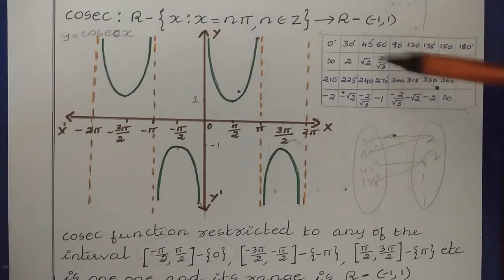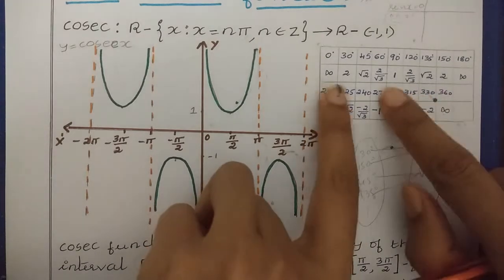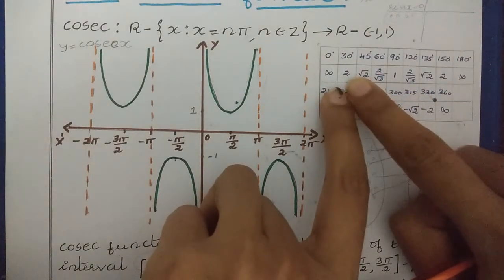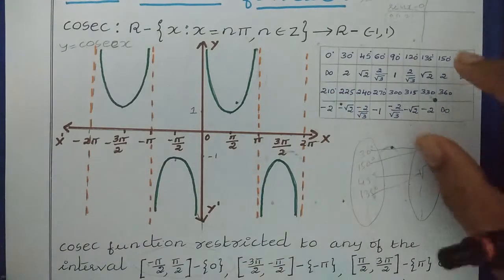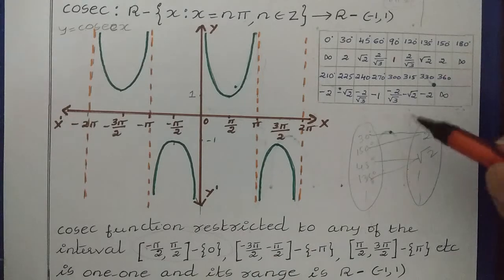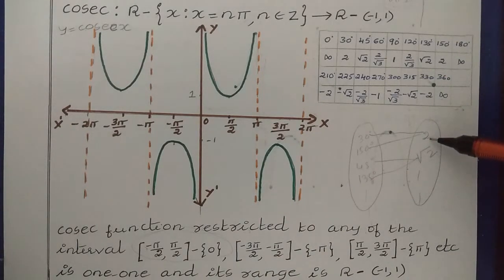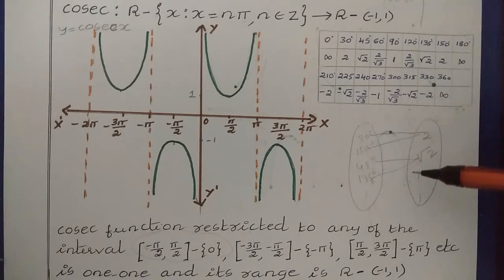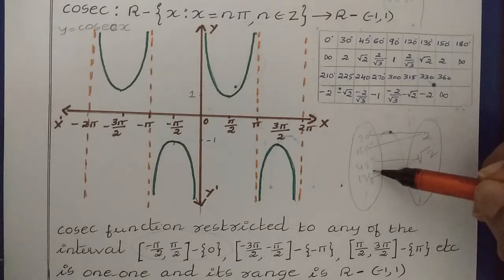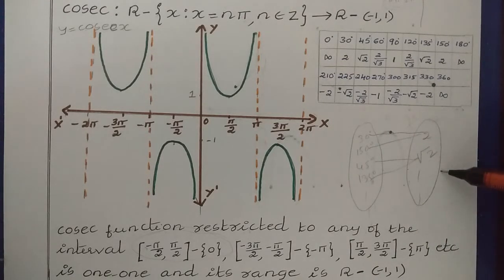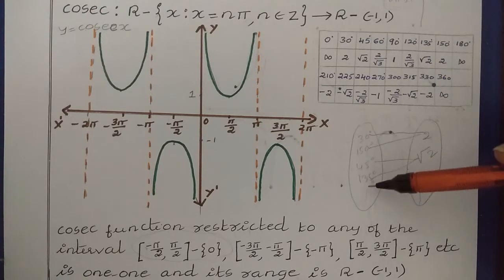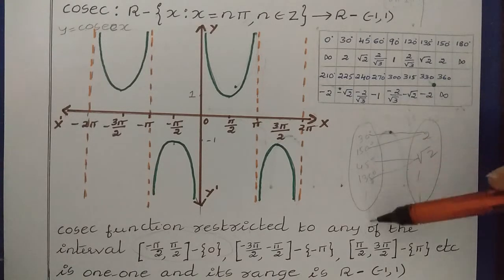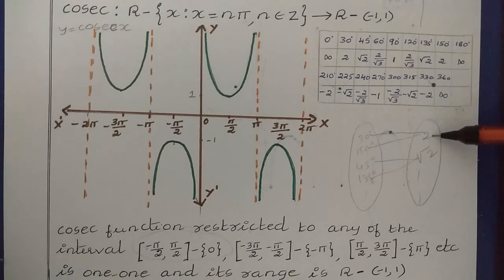In this case, suppose if I take these set of values, you can clearly observe that for cosec 30 degrees the answer is 2, and for cosec 150 degrees the answer is also 2. If I represent this in the form of a mapping diagram, you can clearly observe that for every image in the co-domain, we have 2 or more pre-images. That shows that this Cosec Function is not one-one. To be one-one, every image must have a unique pre-image.